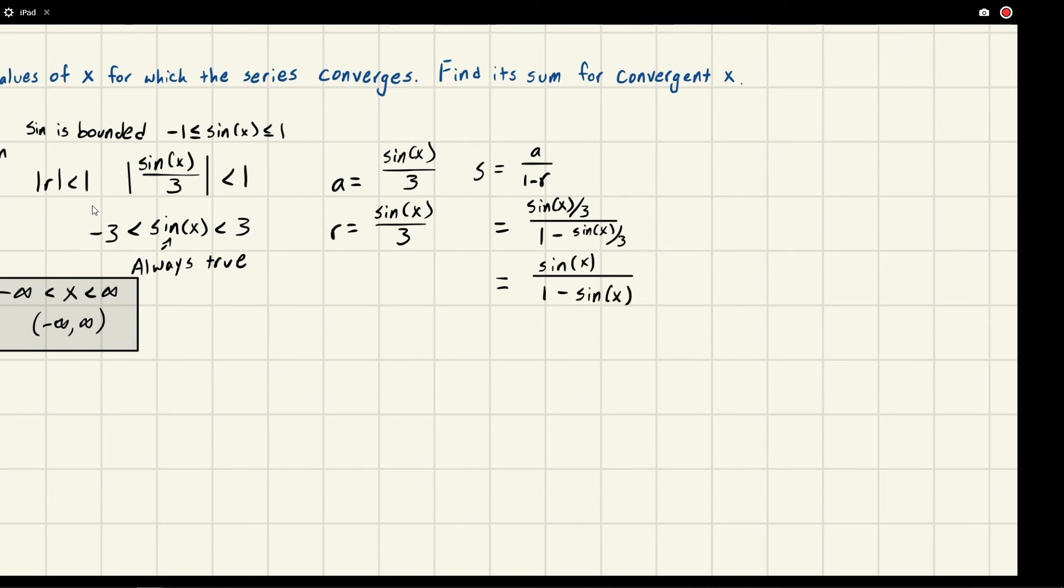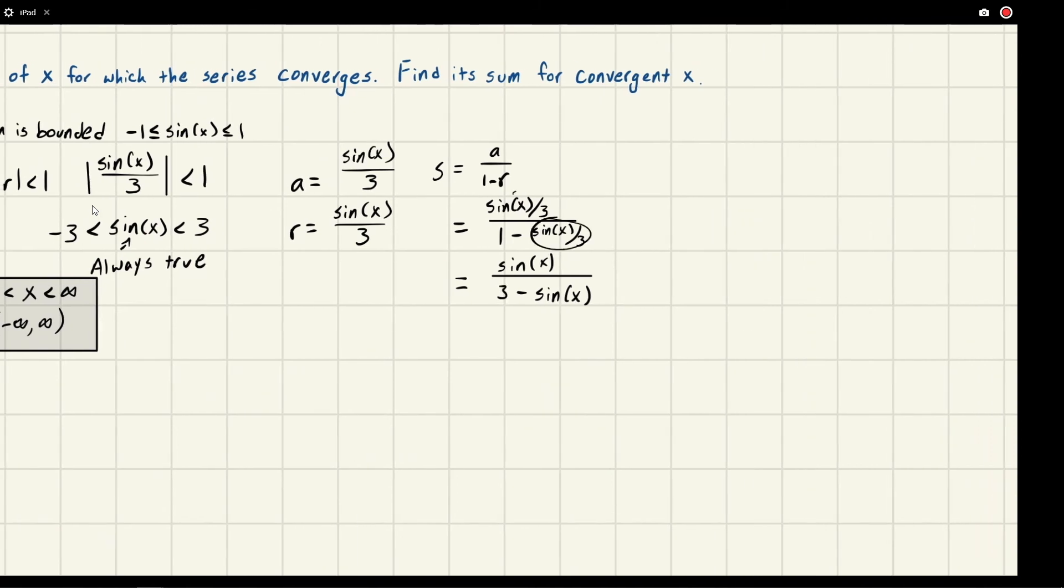We're going to get sine x over—whoops, it's not one, multiply by three—I'm going to get three here. Threes will cancel here and here, and this will be left as a three. So we get sine x over three minus sine x, and this is what we get for the sum of the series.